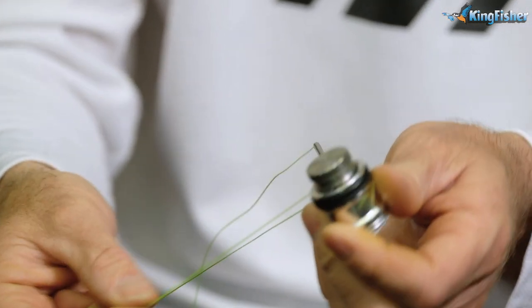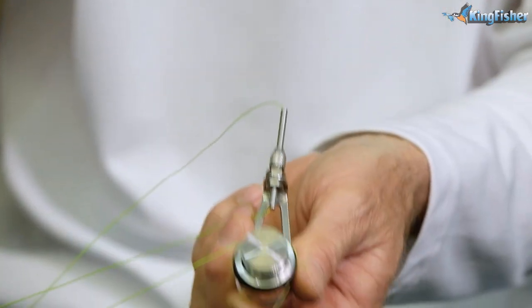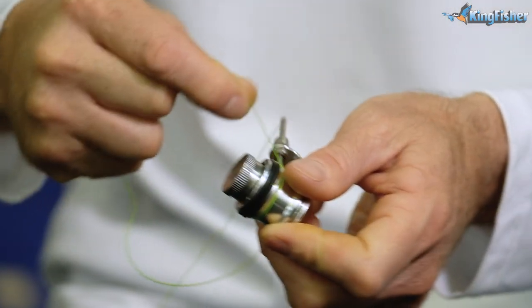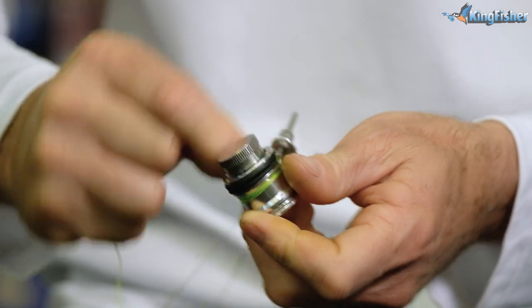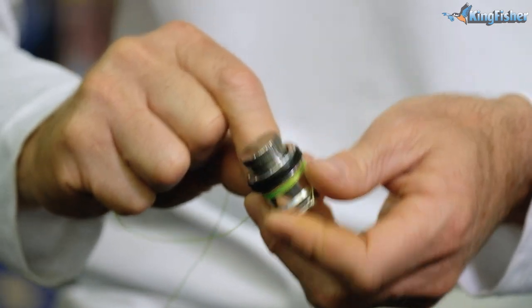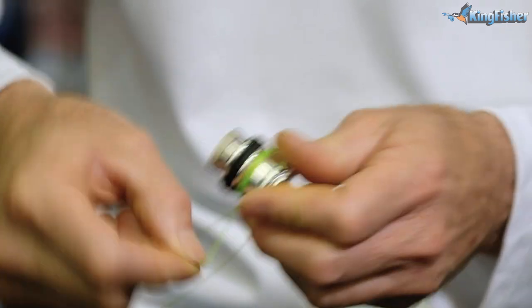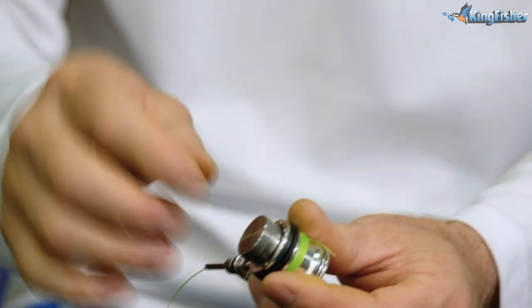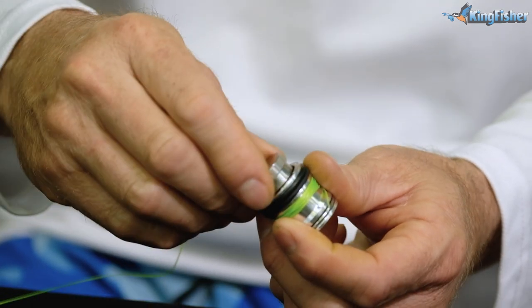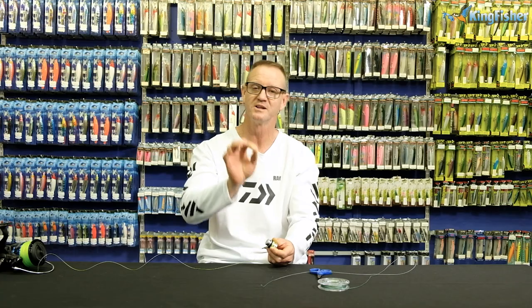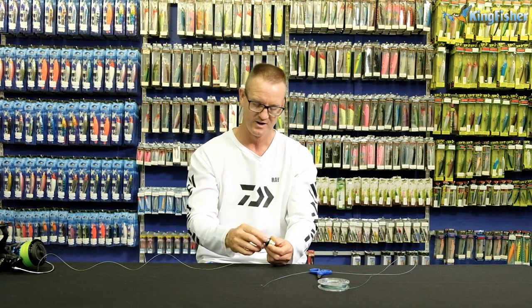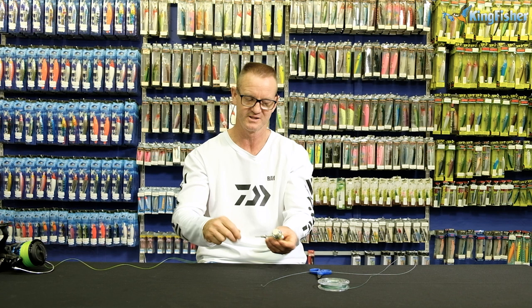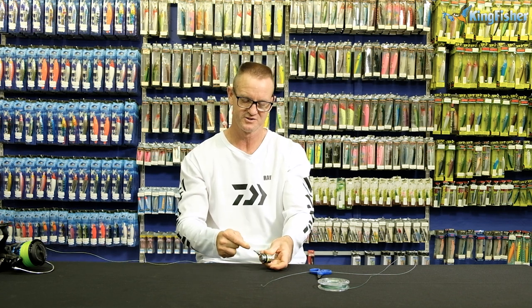What we then do is we take our braid and we wrap it around 10 times. 1, 2, 3, 4, 5, 6, 7, 8, 9, 10. I went 11 times. You then got a tensioner on the side which you can tighten or loosen depending on how tight you want your knot to be. I've just set mine to the tension that suits me the best, which is quite stiff.